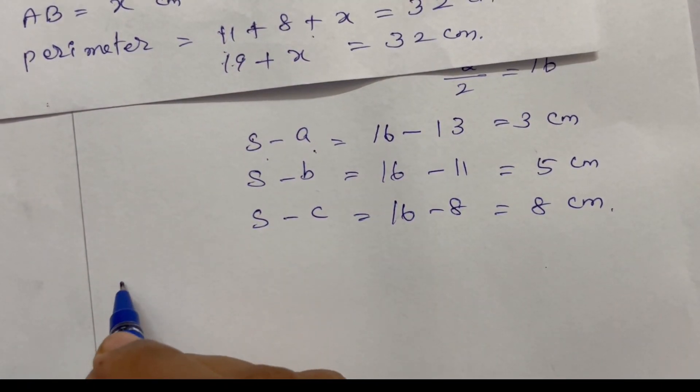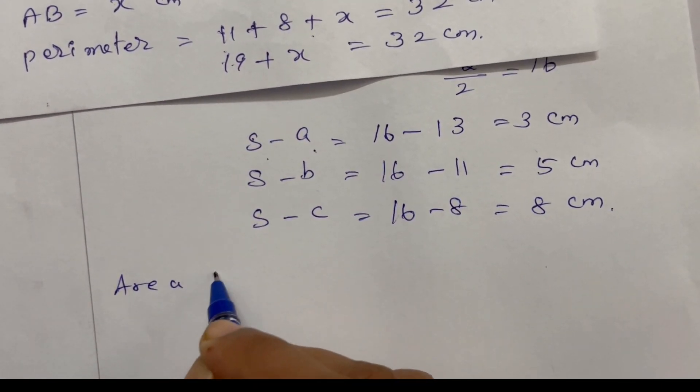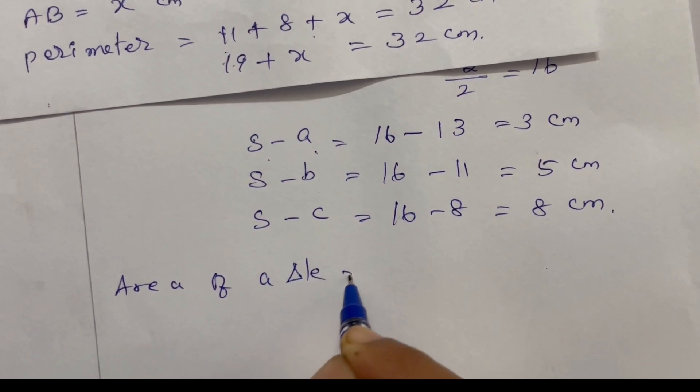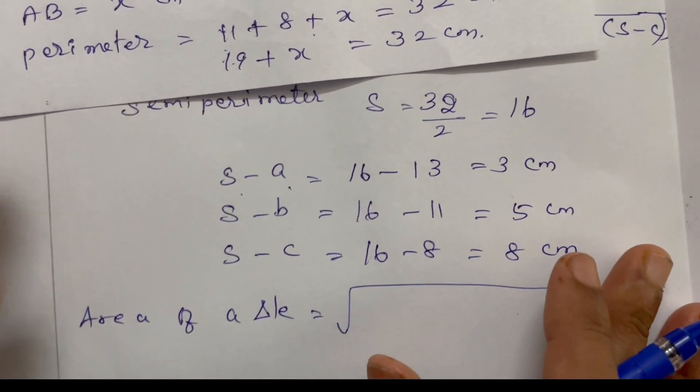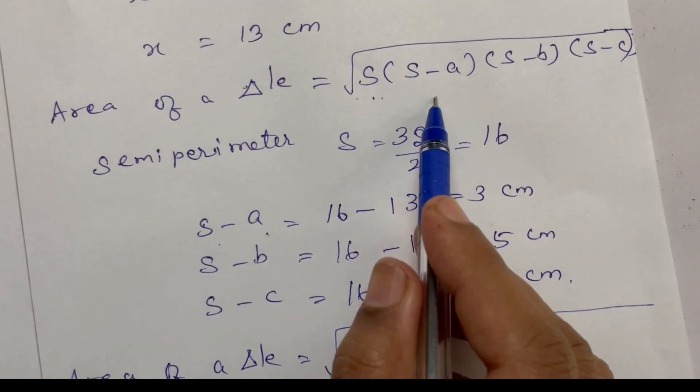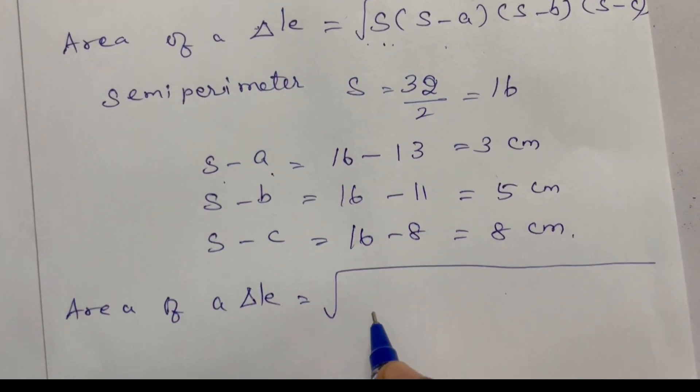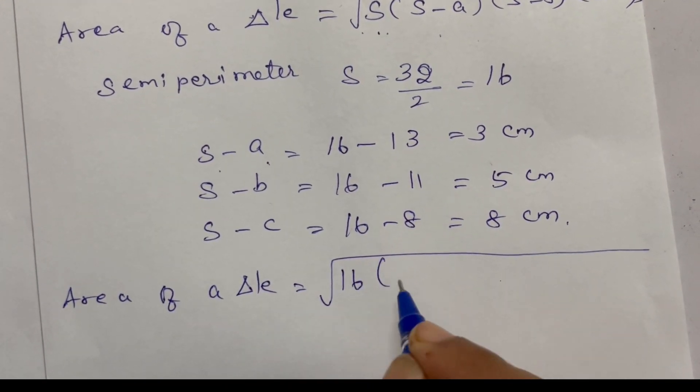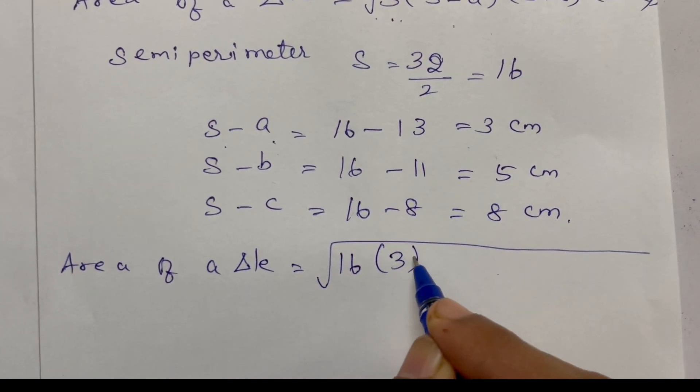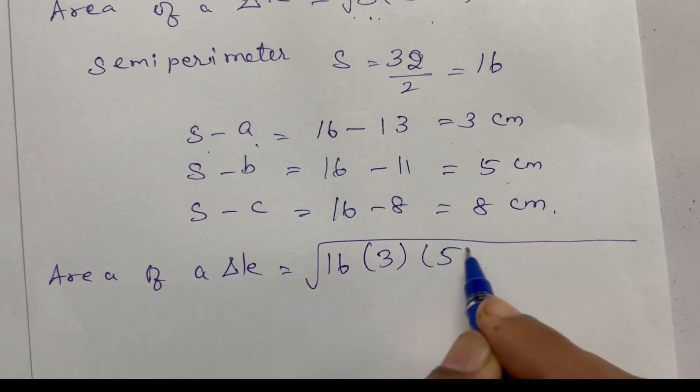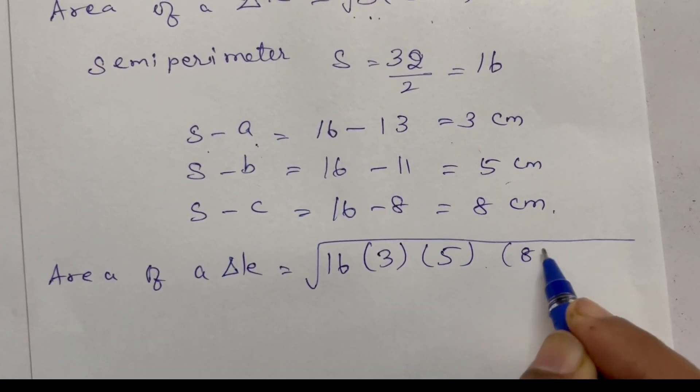Now area of a triangle, calculate using the formula. s into s minus a: s is 16, s minus a is 3, s minus b is 5, s minus c is 8.